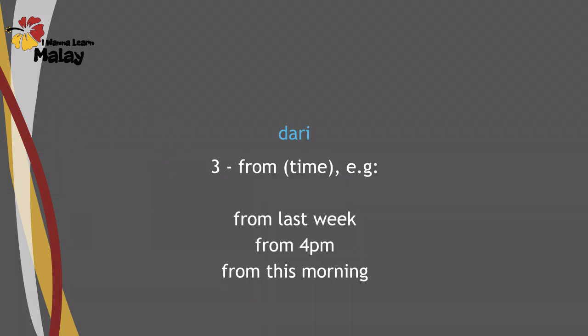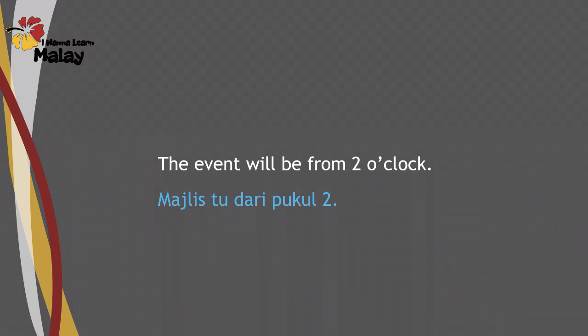And third, in the context of time — when we're referring to from a certain point in time. For example: 'The event will be from 2 o'clock' — Majlis tu, dari pukul 2. If you want to refer to from 1975, we use dari: dari sembilan belas tujuh puluh lima. Or dari hari Sabtu, which means from Saturday.